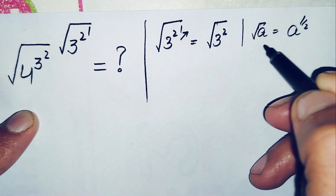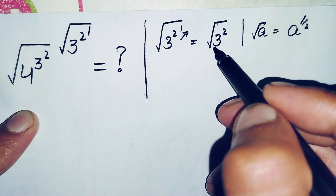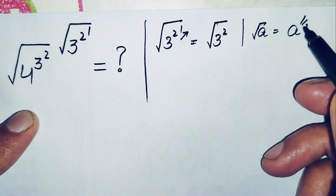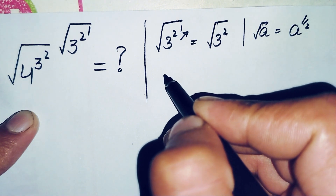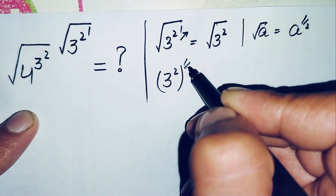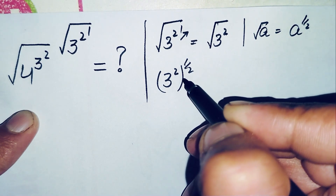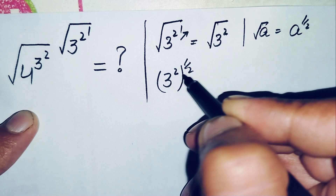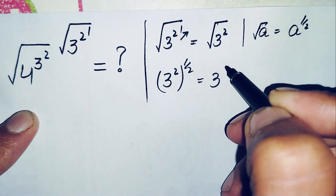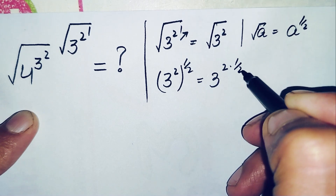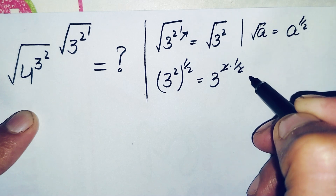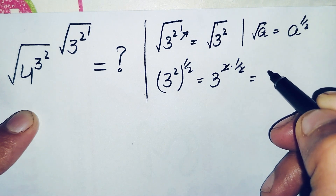We know that we can write the square root of any number a as a raised to power 1 over 2, or one-half. This is the exponential form of a radical number. So the same change we will do here: this will become 3 raised to power 2, all raised to power 1 by 2. Using the exponential property, we multiply the powers: 3 raised to power 2 times 1 by 2.